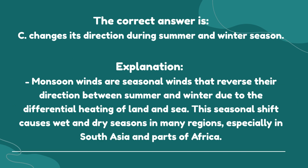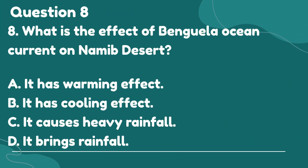The correct answer is C. Changes its direction during summer and winter season. Explanation: Monsoon winds are seasonal winds that reverse their direction between summer and winter due to the differential heating of land and sea. This seasonal shift causes wet and dry seasons in many regions, especially in South Asia and parts of Africa.